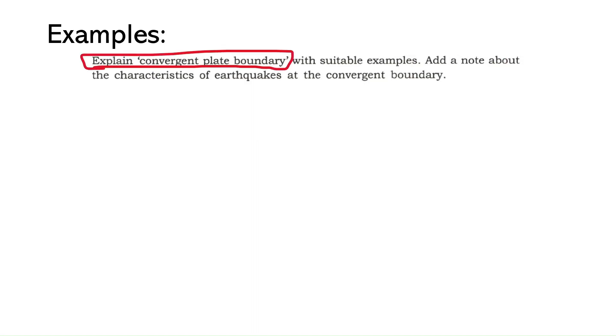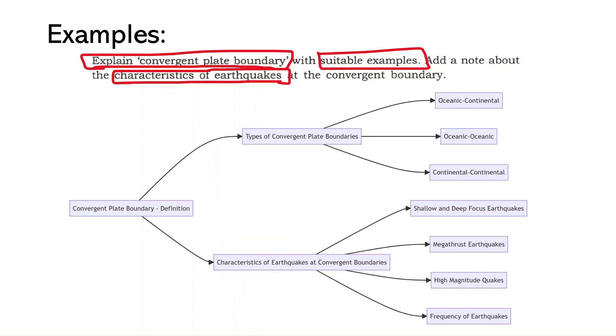And to do that, let's break down the question into smaller parts. It has three parts. First is convergent boundaries and their types. Second is their relevant examples for each type of plate boundary, the convergent boundaries. And the third segment asks us about the earthquake characteristics of the convergent margins. Now that we have a clear understanding of the question and its sub-parts, we can proceed with an answer.